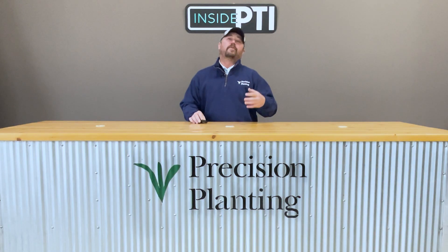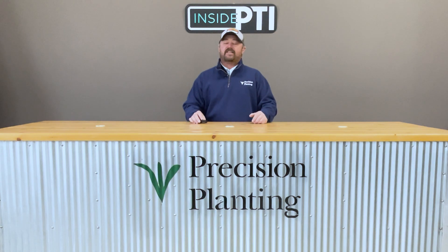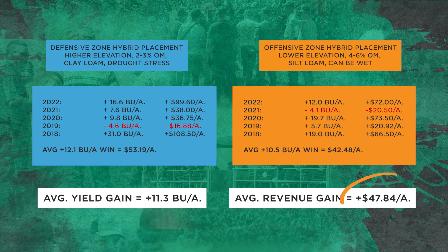Let's look at long-term results. We've been studying multi-genetic corn planting for the five years we've been here at the PTI farm. On the tough soils, we're averaging 12.1 bushel yield gains — a $53.19 winner. On the good ground, the high-productive soils, we're picking up over 10 bushels — a $42 winner. Right now we're averaging 11.3 bushel gains and $47.84 of a win rate.